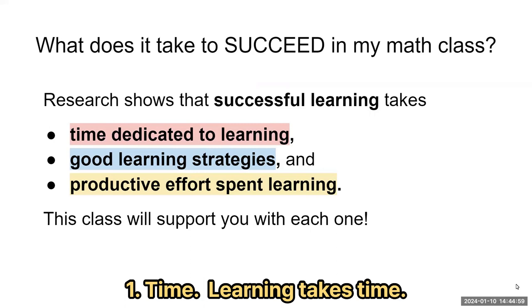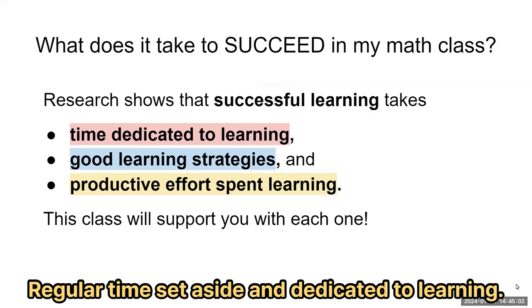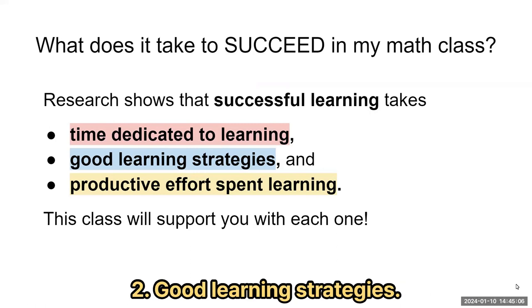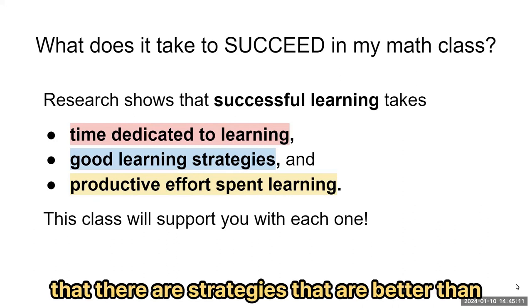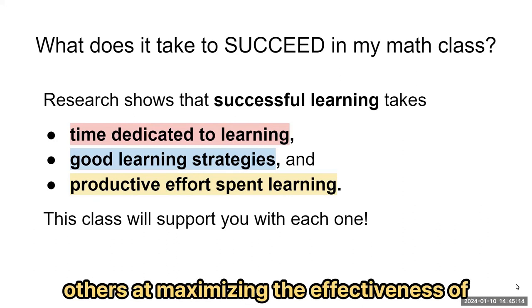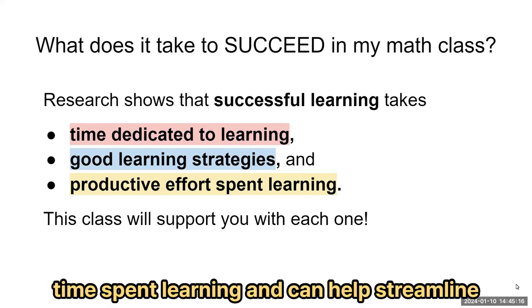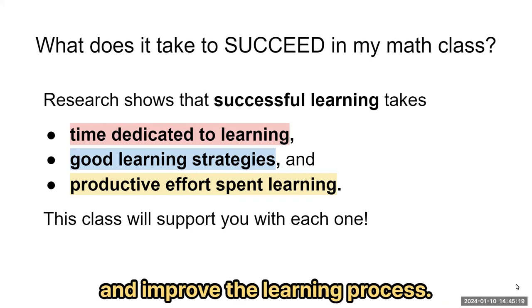Number one: time. Learning takes time — regular time set aside and dedicated to learning. Number two: good learning strategies. Brain research on how people learn has identified that there are strategies that are better than others at maximizing the effectiveness of time spent learning and can help streamline and improve the learning process.